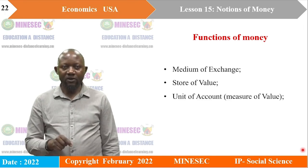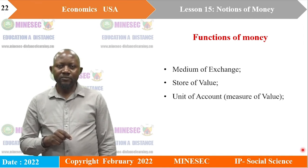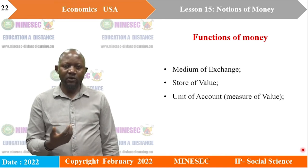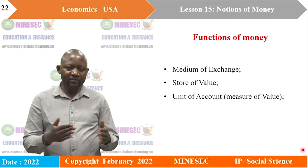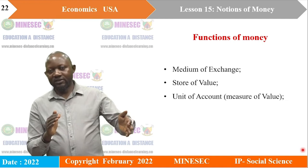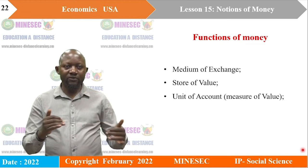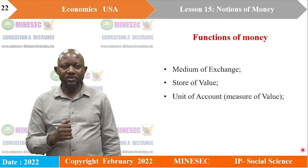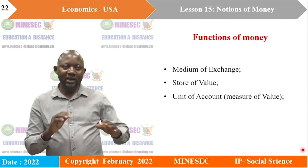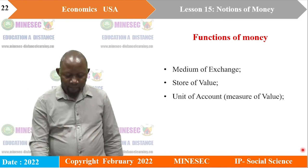The unit of account, or measure of value, is another function. Given that money acts as a measuring rod through which the values of commodities can be determined, prices can be quoted for commodities. When prices are quoted, you can compare the value of those commodities. For example, if the price of a fridge is 20,000 CFA and a bag is 10,000 CFA, you can safely say the fridge has a higher value.